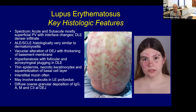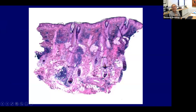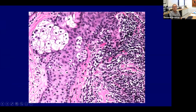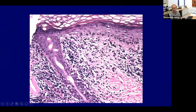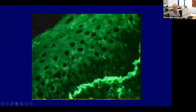You usually get more thickening of the basement membrane zone with lupus — especially discoid LE — than with dermatomyositis, but they can look very similar. They might show you a clinical picture and ask if it's more likely dermatomyositis or lupus. On immunofluorescence, if positive, you get diffuse coarse granular deposition of all immunoreactants at the dermal-epidermal junction. A markedly thickened basement membrane zone with superficial-deep lymphocytic infiltrate and follicular involvement would be discoid lupus erythematosus.